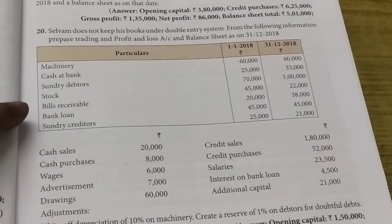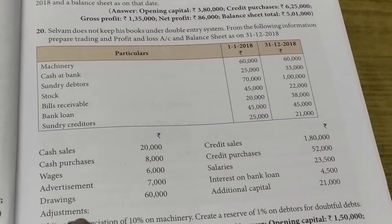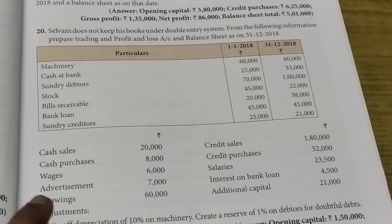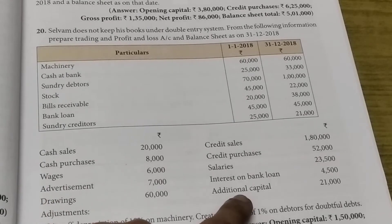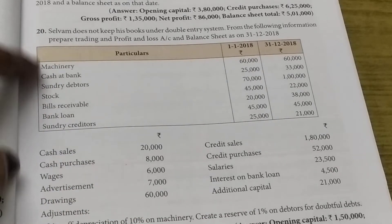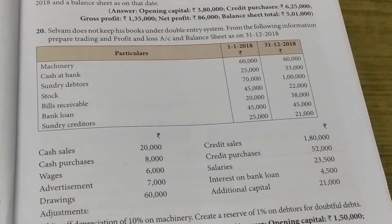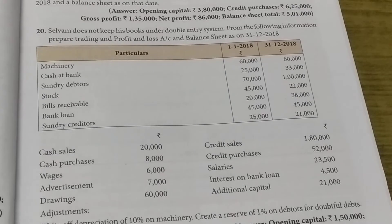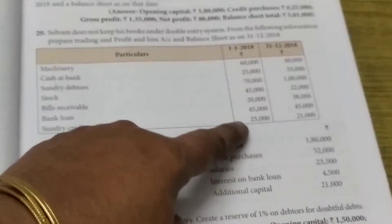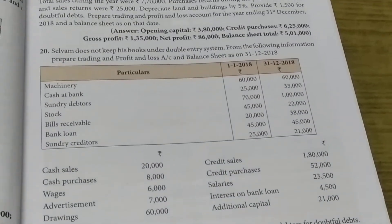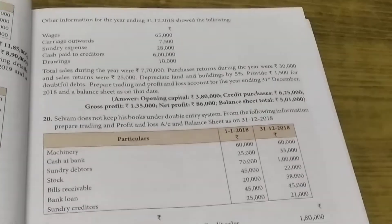After reading this question, we can find out that the opening capital is not given in the question. Only additional capital is given here. There is no opening capital and closing capital. So, without opening capital we cannot do the sum. First, we want to find out the opening capital. In order to find out the opening capital, we want to prepare a statement of affairs. With the use of opening balances, we can prepare the statement of affairs and the balance will be the capital.